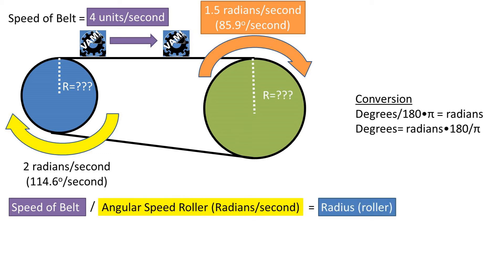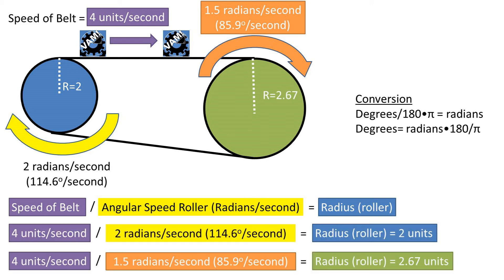This time, we arrange to get what we are solving for, radius of the rollers, to one side. So the speed of the belt over the angular velocity equals the radius of the rollers needed. Plugging in our values, we get a radius of the first roller of 2 units and a radius of the second roller of 2.67 units.